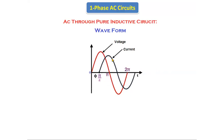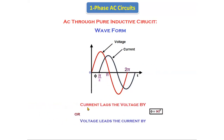If we observe the waveform, the voltage is leading — voltage is starting from zero position and the current is starting from 90 degrees, so current is lagging. We can say that current lags the voltage by 90 degrees, or equivalently, voltage leads the current by 90 degrees. Both statements are the same for the pure inductive circuit.